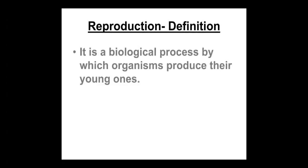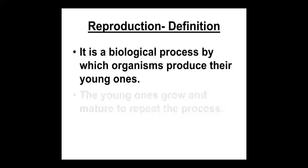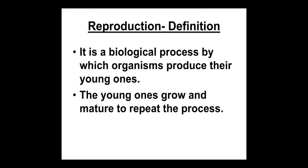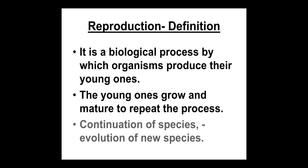The definition of reproduction: it is a biological process by which organisms produce their young ones. If the human being produces an infant, that is called reproduction. The young one grows, matures, and becomes an adult, and repeats the same process. Every organism reproduces, which leads to continuation of that particular species — for example, the human species, Homo sapiens. Reproduction also helps in the evolution of new species.